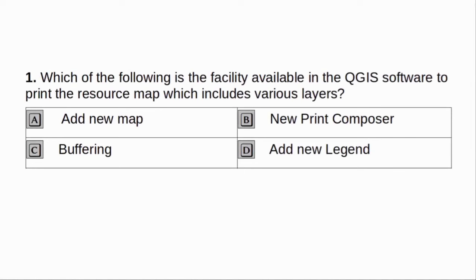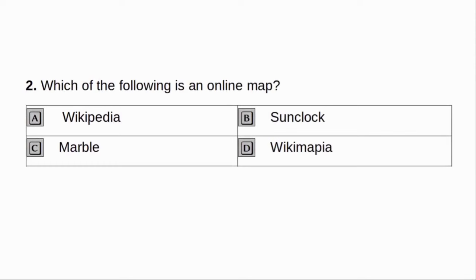Chapter 6 MOP Reading Part 1. Which of the following is the facility available in the QGIS software to print the resource map which includes various layers? A. Add new map. B. New print composer. C. Buffering. D. Add new legend. Answer: B. New print composer.